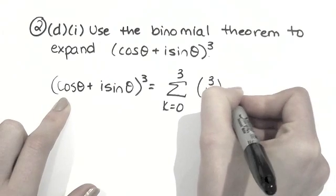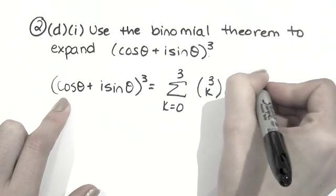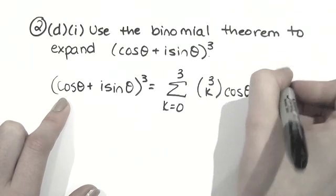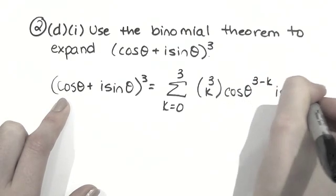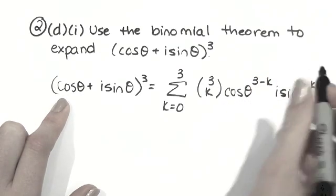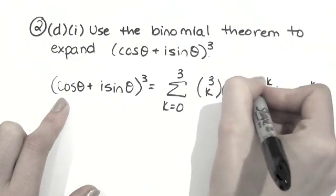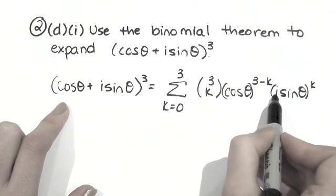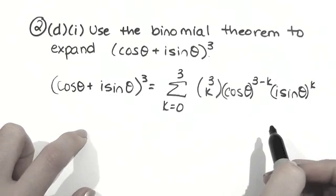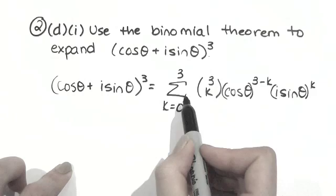And then we take our first term, cos theta to the power of 3 minus k, and then i sine theta to the power of k. So 3 minus k and k. I'll just put brackets around those so that the k includes that i and it's all very clear.